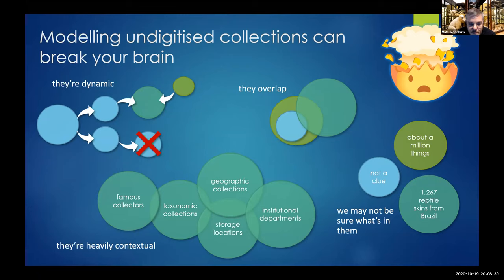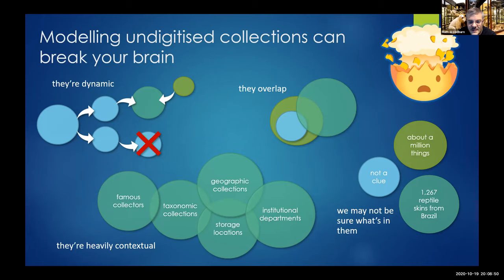We also commonly deal with various levels of uncertainty in collection descriptions — when describing a collection, we often don't know exactly what's in it or how many there are. And the whole concept of a collection is heavily contextual; it depends on the purpose for which you're describing it, and we may want to break the same collection down in multiple ways for different purposes.